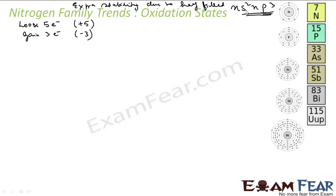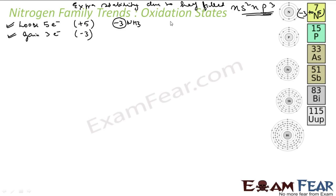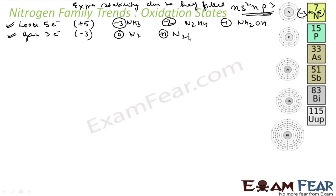The valence shell has 5 electrons, so to gain full stability it has to either lose 5 or gain 3 electrons, meaning the oxidation number of Nitrogen lies between -3 and +5. Minus 3 is shown by NH₃ (Ammonia), -2 by N₂H₄ (Hydrazine), -1 by NH₂OH (Hydroxylamine), and 0 by N₂ (Nitrogen gas). Plus 1 is shown by N₂O (Nitrous oxide).